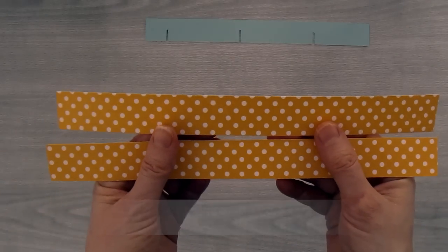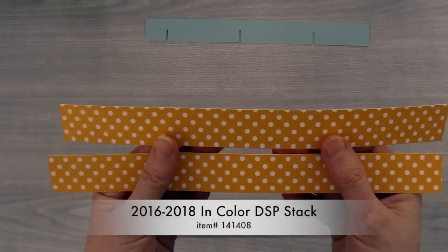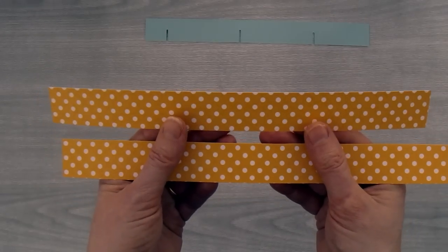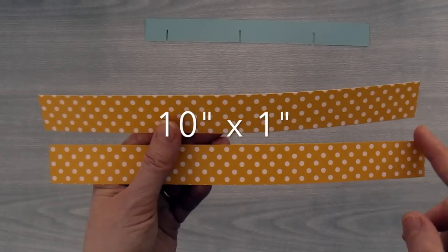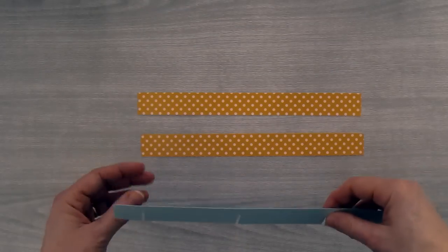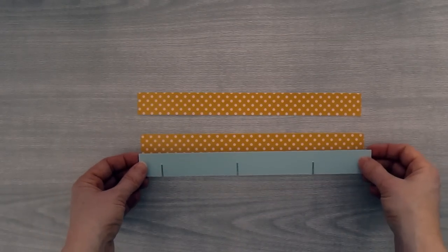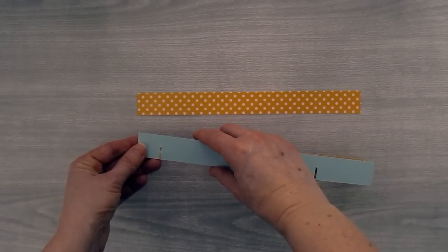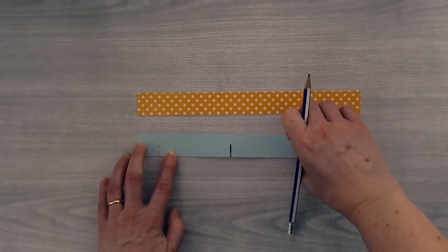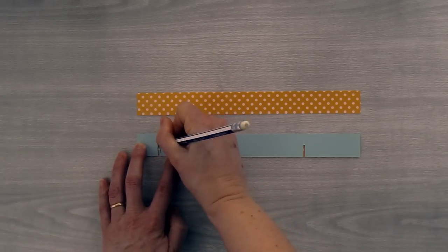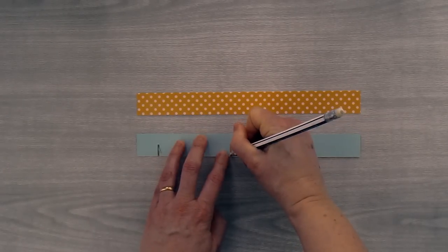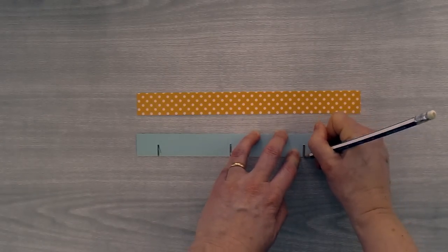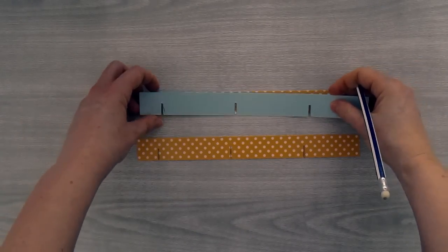Next I'm going to use some 2016-2018 In Color designer series paper. I've cut two strips to 10 inches by an inch. We're going to use the template to trace the slots onto the paper, so just make sure that it's lined up, and then take a pencil and just trace your slots onto the paper. Do the same for the other strip.